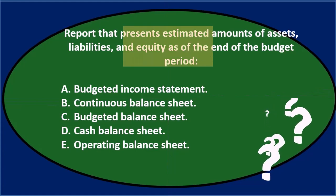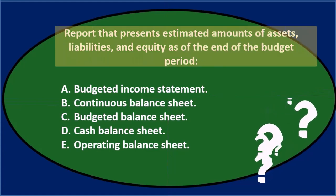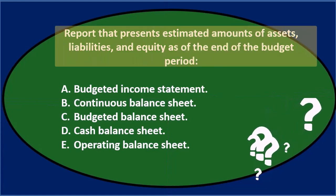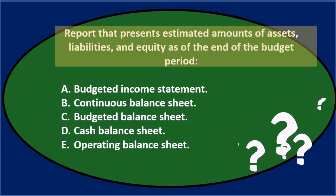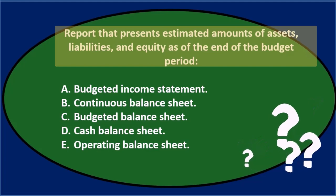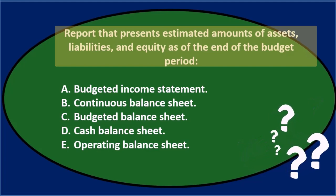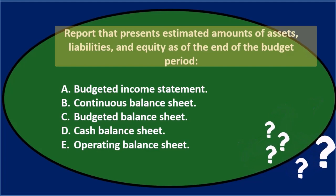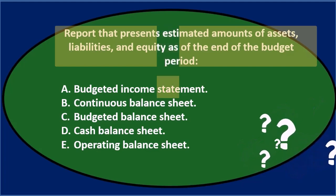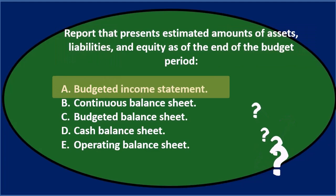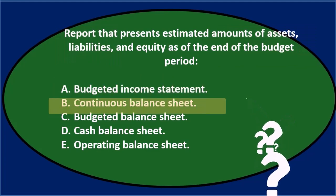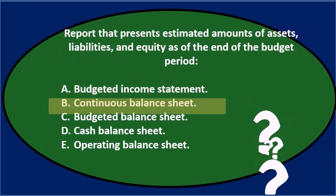First question: a report that presents estimated amounts of assets, liabilities, and equity as of the end of the budget period is either A, budgeted income statement, or B, continuous balance sheet.